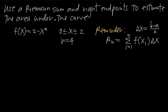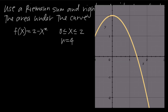Let's look at what this function looks like. If we graph f equals 2 minus x squared, this is what it looks like. It should make sense because we have negative x squared, which tells us we're going to have an upside-down parabola. And this 2 tells us the parabola intersects the y-axis at y equals 2.